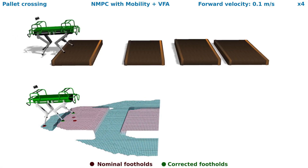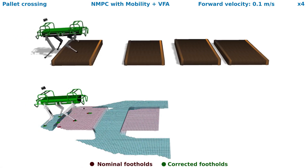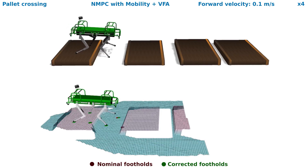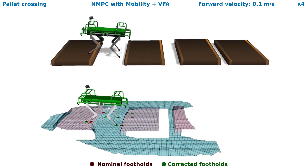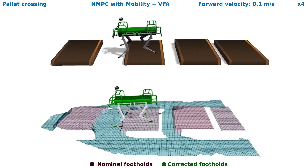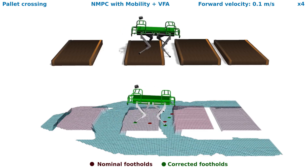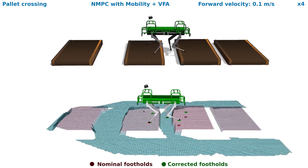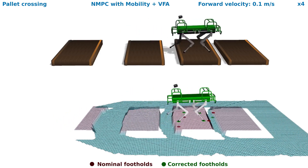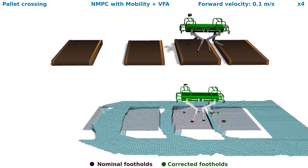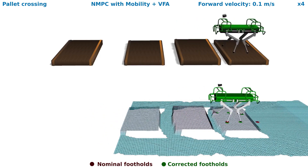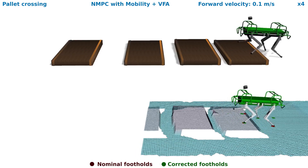We test our NMPC with mobility by crossing a set of pallets, each of 1 m length with varying heights. Again, the robot pitches as required to maintain the leg mobility. The NMPC is helped by vision-based foothold adaptation (VFA) that provides foothold corrections to avoid collisions, narrow gaps, and footholds outside the workspace of the swinging leg.